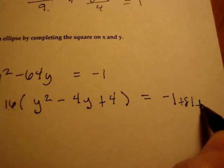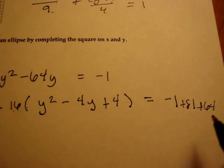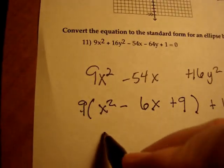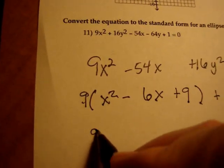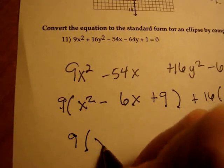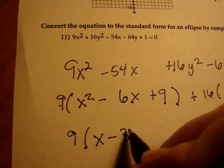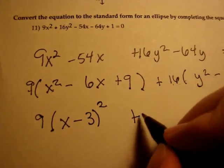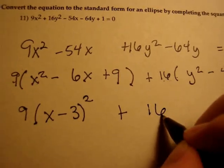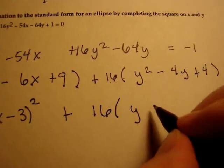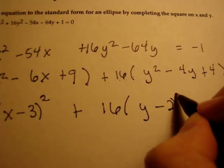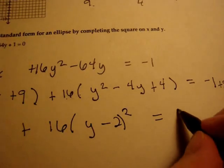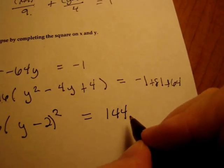Okay, now let's simplify. I still have my 9 out front. Now I know that this is going to factor into x minus 3 quantity squared. That was the whole point of adding that magic number. Plus, let's look at the y's. 16 out front times y, that will turn out to be minus 2 quantity squared equals simplify your constants and you get 144.